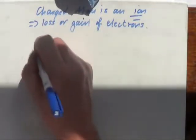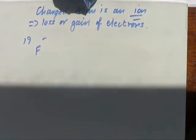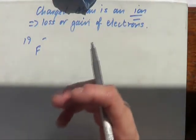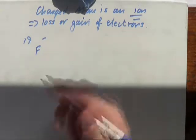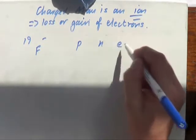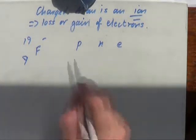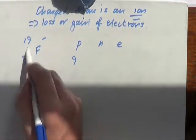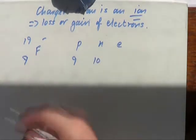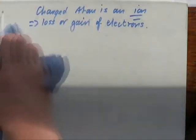Let's take fluorine with a 1− charge — mass number 19. They may not give the atomic number, so you go to the periodic table and find that fluorine is nine. So protons are nine, neutrons are 19 minus 9 which is ten, and electrons would normally be nine, but there's a negative charge so it must have gained another electron — so it must be ten.